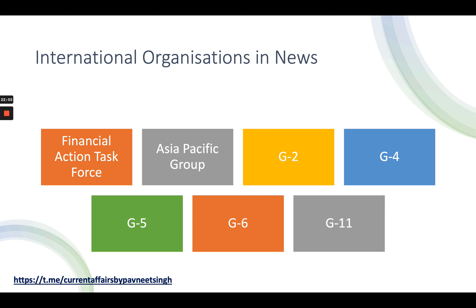G6 basically constitutes the group of the six richest countries of the world. The six countries include the US, the United Kingdom, France, Germany, Italy and Japan. These countries came together to create a club of the rich countries where they can have their own discussions. So looking at G2, G4, G5 and G6, each grouping was created with a different objective.